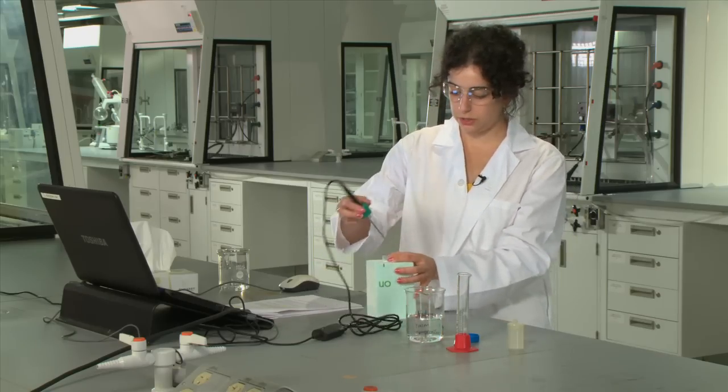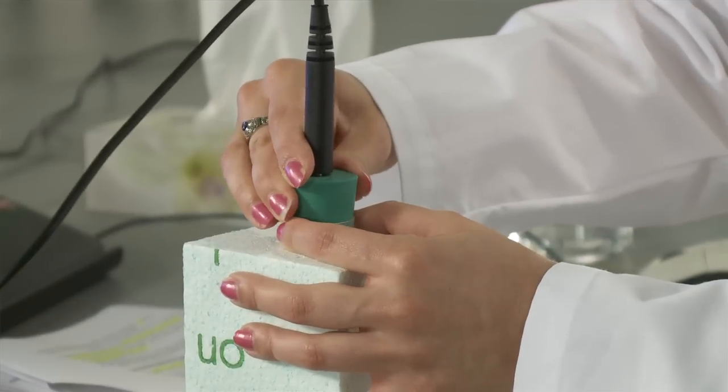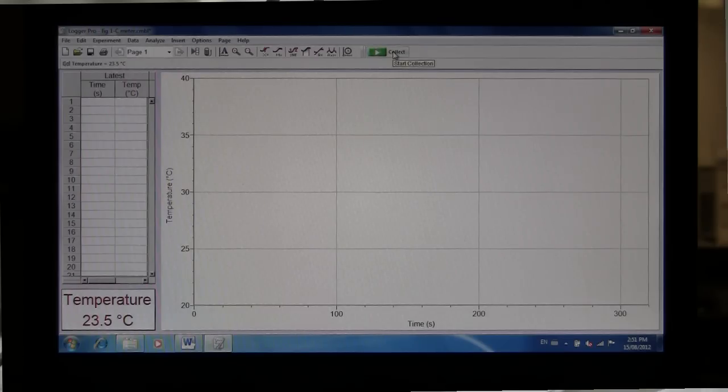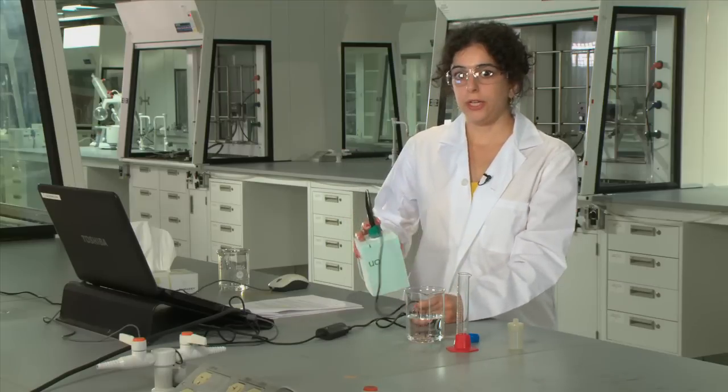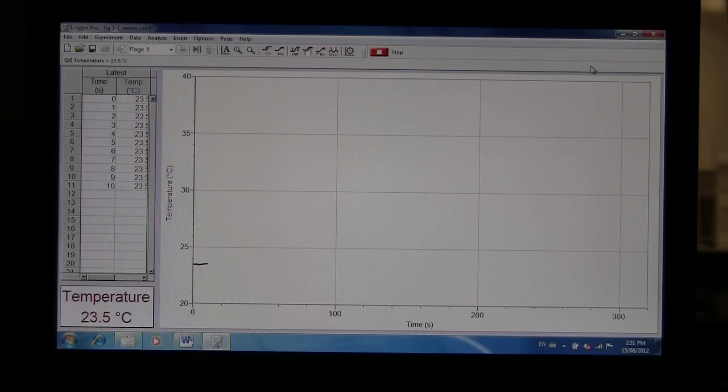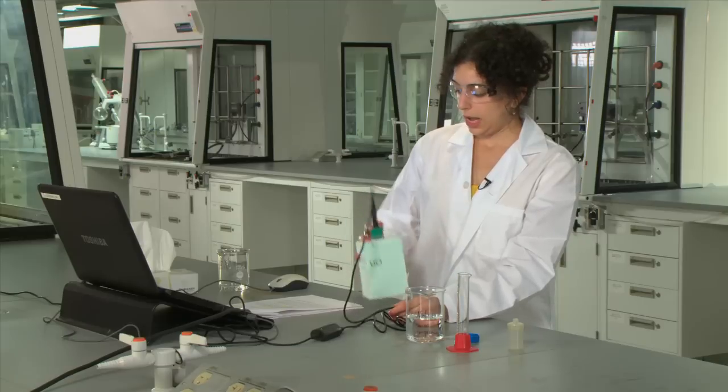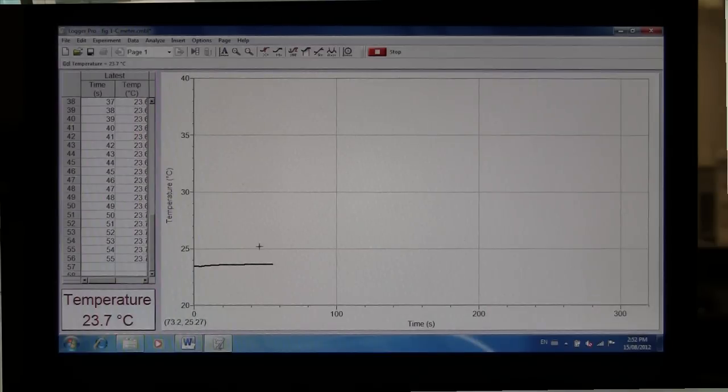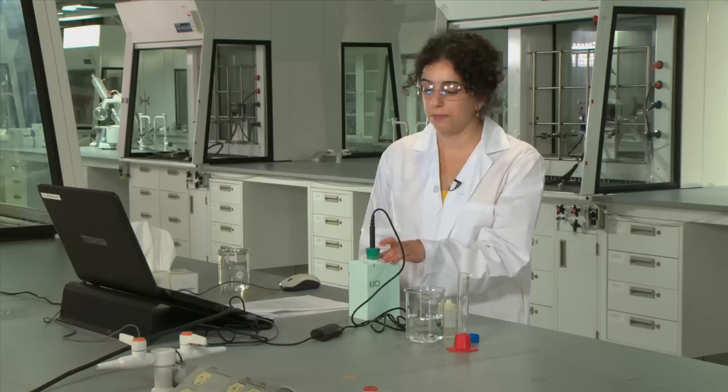Replace the probe like you did in the first part and then in Logger Pro software click collect. Hold the calorimeter again like you did previously and shake for about 60 seconds. Let it stand for 100 seconds or when the graph has somewhat stabilized. Take a reading and record this in your notebook. This is the initial temperature of the calorimeter with the room temperature water inside.